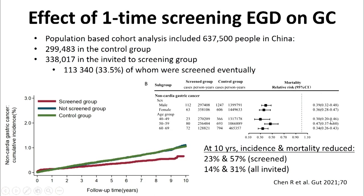We marked out and performed ESD using a clip and dental floss for traction — I'm also director of the endo unit and I'm kind of cheap. It went well. The effect of one-time screening was described in a recent paper in Gut: over 600,000 participants in China, evenly divided into control versus screening group. Only about one-third of the screening group went on to have one-time EGD. Over 10 years, incidence and mortality were reduced 23% and 57% respectively in those screened. On an intention-to-treat basis, incidence decreased 10–14% and mortality 31% — just the effect of a one-time screening EGD.